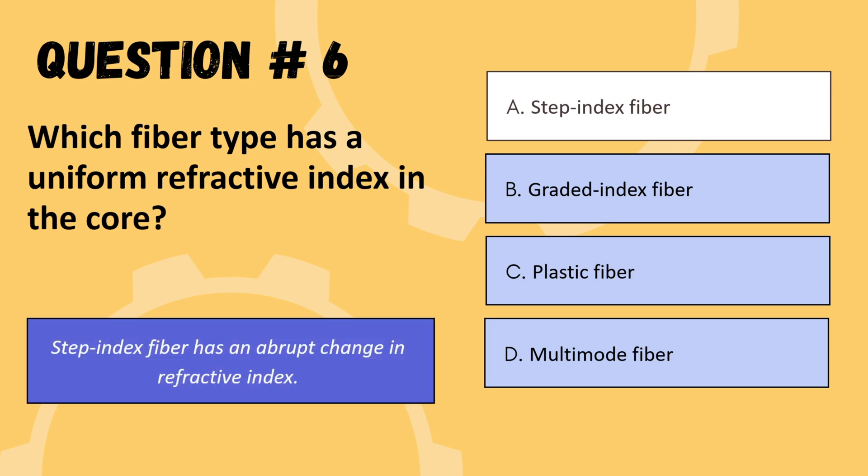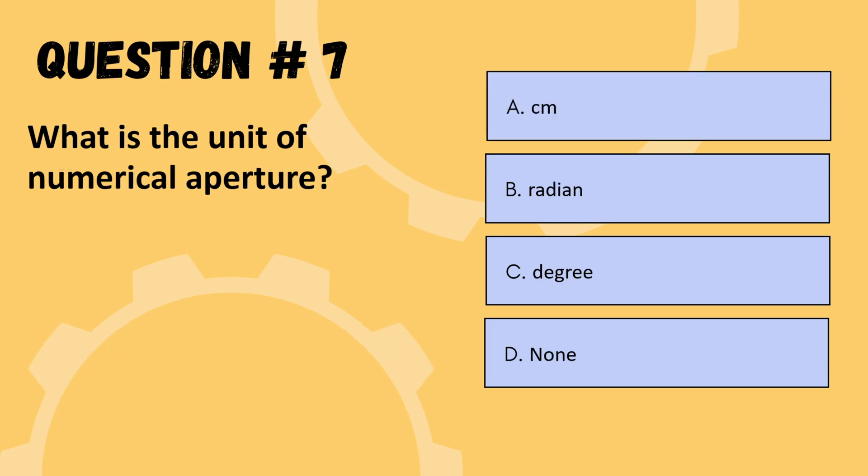Next question: what is the unit of numerical aperture? Options are cm, radian, degree, or none. The correct option is D: none — numerical aperture is a dimensionless quantity.